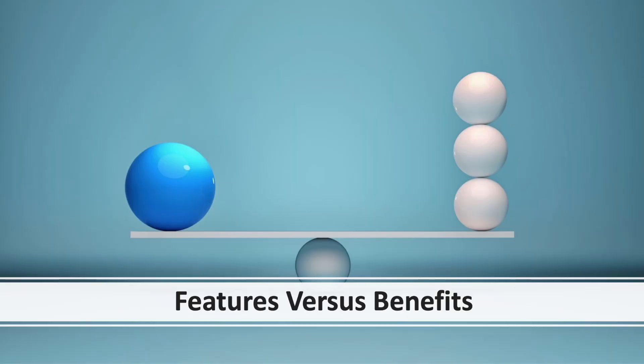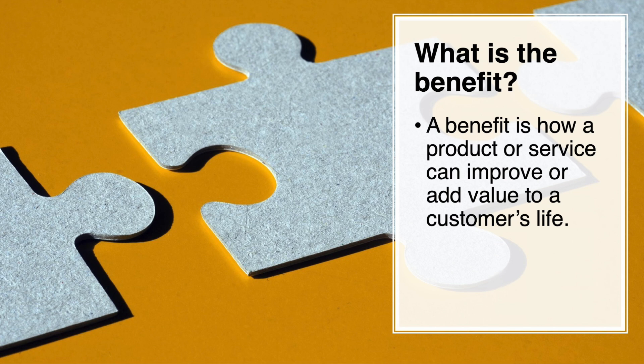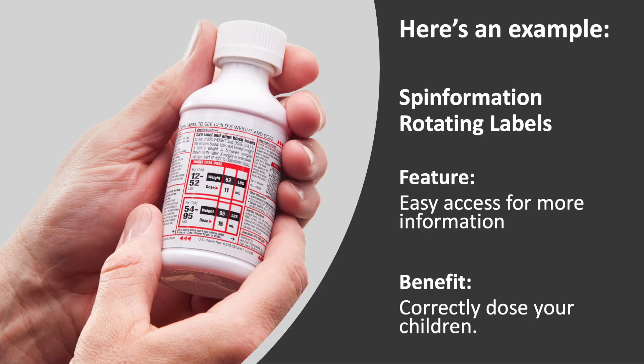Now let's talk about features versus benefits, because people get really confused on this. Features are the functionality of your product or service — what does it do? Benefits are why does anybody care — what are you doing for me? It makes my life easier, better, faster. Here's an example: I have a rotating label. The feature was that you can access information very quickly. The benefit? That information helps you dose your child correctly by weight, not by age. Feature: easy information access. Benefit: dosing your child correctly.